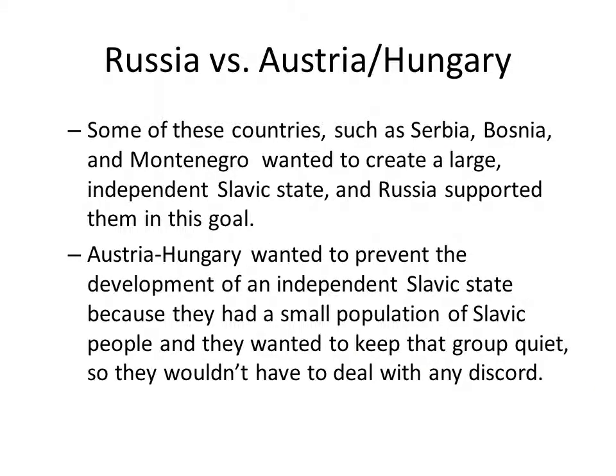This is where we come into how World War I really starts. Serbia, Bosnia, and Montenegro wanted to create their own independent Slavic country, and Russia loved the idea. On the other hand, Austria-Hungary wanted to prevent this from happening because they had a population of Slavic people in their own country. They were worried the Slavic people would want to break away and join the new Slavic state, so Austria-Hungary did not want to lose any territory.